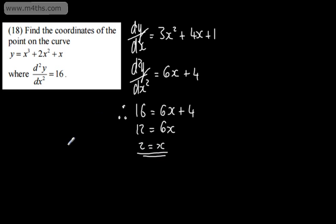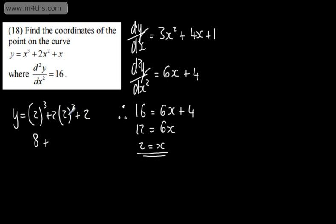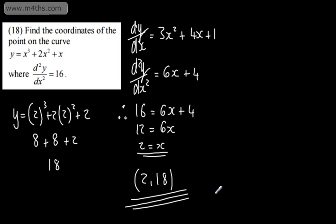If x equals 2, substituting into the original curve: y equals 2 cubed plus 2 lots of 2 squared plus 2, giving 8 plus 8 plus 2 equals 18. So the coordinates are (2, 18). That's relatively straightforward as long as you know what you're doing — a relatively straightforward exam-style question.